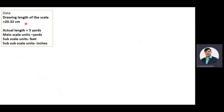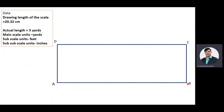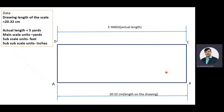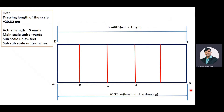With the drawing length of 20.32 centimeters and an assumed width of 4 or 5 centimeters, draw rectangle ABCD. AB represents the drawing length equal to 20.32, and its actual length is 5 yards — so AB represents 5 yards. Since yards are the main scale units, divide AB into 5 equal parts, each representing 1 yard. Then divide the first main scale division into 3 equal parts, since feet are the immediate subunits for yards, with each part representing 1 foot. Divide AD into 12 equal parts since inches are the immediate subunits for feet, each part representing 1 inch.